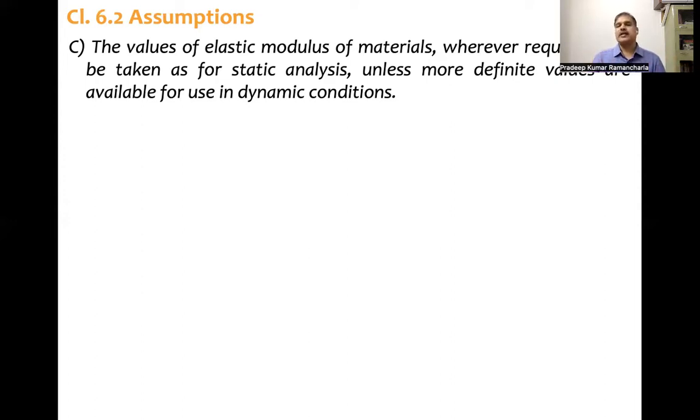What code is suggesting is, static values of elastic modulus are to be used in dynamic analysis. But if there is a definite value, if it is available under dynamic conditions, that can be used in dynamic analysis. But let us look at what are the values which are given in other codes, other IS codes. For concrete, which is given in IS 456, modulus of elasticity value 5000 under root fck, fck being in Newton per millimetre square. That is, grade of concrete. Then for steel, ES, modulus of steel is equal to 2.1 into 10 to the power of 5 Newton per millimetre square.